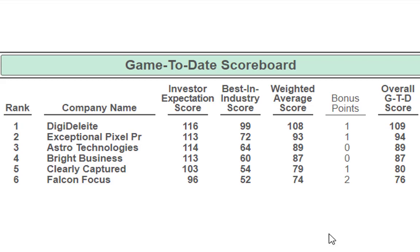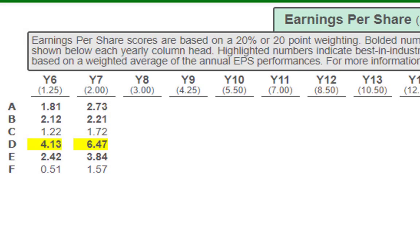Let's look at a couple more reports. Earnings per share — it looks like 4 out of 6 met expectations. Company D was best in show with $6.47. What I look for when analyzing if a team is on the right track is whether they increased. Company C went from $1.22 to $1.72 — fantastic. Company F went from $0.51 to $1.57 — tremendous.